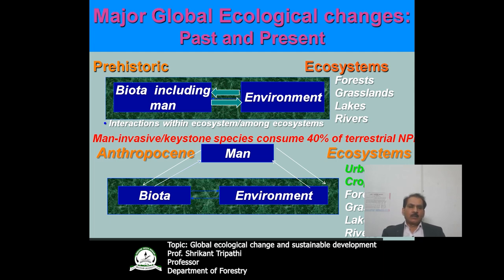As a result, we have these global ecological changes. What has gone wrong? What are the major drivers that affected these interactions is what we would like to explain. As a result of these changes, we now have croplands and urban ecosystems — new ecosystems — while natural ecosystems are shrinking. Nowadays, man has become an invasive keystone species consuming more than 40 percent of the terrestrial net primary productivity.